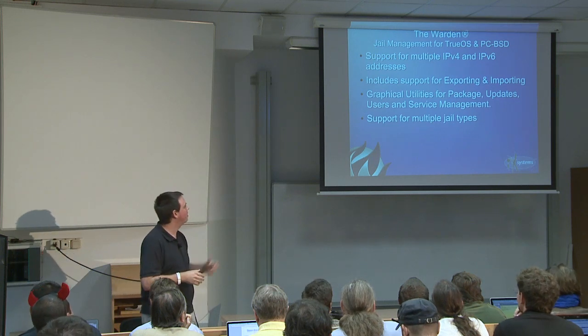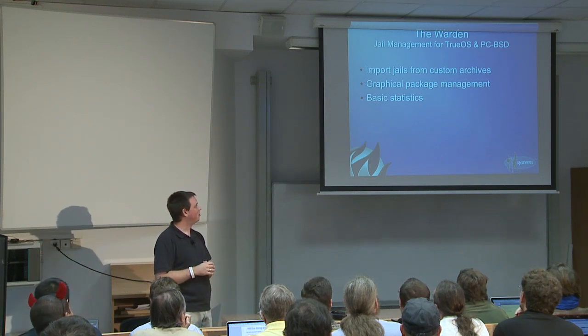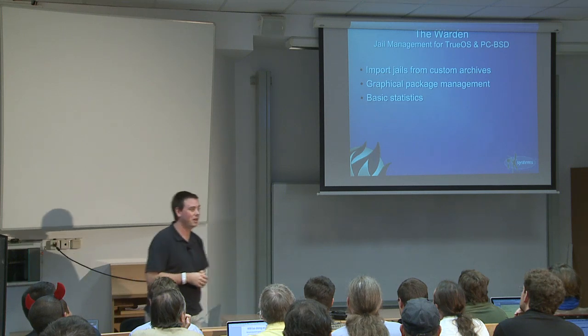For 9.1 we've added support for multiple IPv6 and IPv4 interfaces on one jail. We still have support for importing and exporting. For the GUI, we've added a lot of new graphical utilities — you can manage packages graphically, updates, users, and start and stop services graphically. If you're somebody who has no idea about FreeBSD services, you can now get a jail running with a few clicks without having to know the internals. We also have support for multiple types of jails, and we can import jails from custom archives. We can do basic statistics on your jail via the GUI and command line.